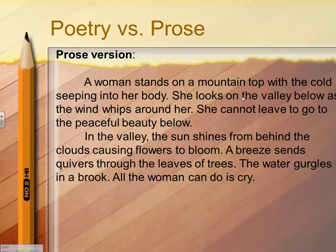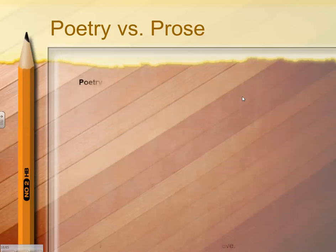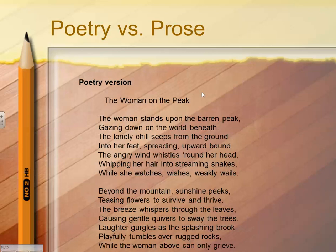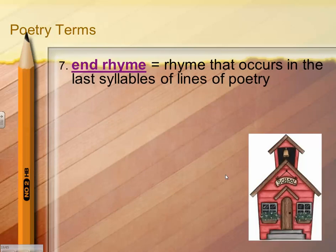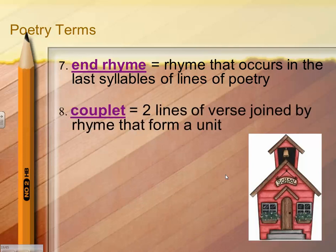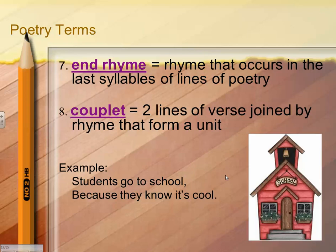This is a prose version of a story and this is the poetry version of the same story. Poetry is written in lines and stanzas. Our next poetry term is end rhyme — rhyme that occurs in the last syllables of lines of poetry. A couplet is two lines of verse joined by rhyme that form a unit. For example, students go to school because they know it's cool. School and cool rhyme and they're paired together — they're both on the same topic and form a unit.